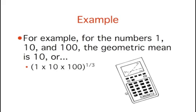For example, for the numbers 1, 10, and 100, the product of all the numbers is 1 times 10 times 100, which equals 1000. Since there are three numbers, we take the cubed root of 1000, which turns out to be 10.